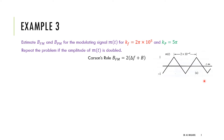Stating Carson's rule: bandwidth equals 2 times (delta_F plus P), where P is the bandwidth of the message. There are two components to find: what is delta_F and what is the bandwidth of the message?